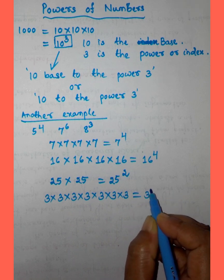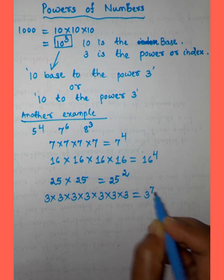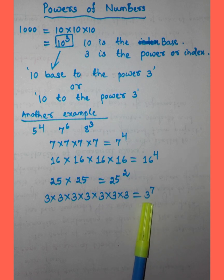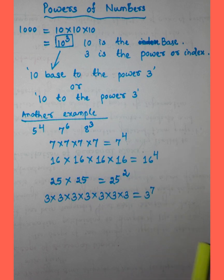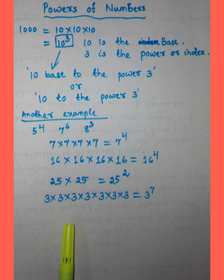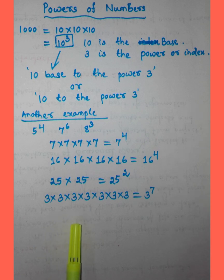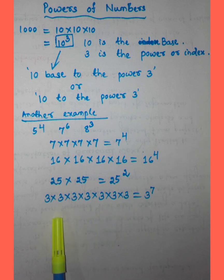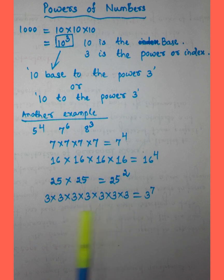We can write this as 3 to the power 7. Here, 3 is the base and 7 is the power or index, because 3 is multiplied 7 times.